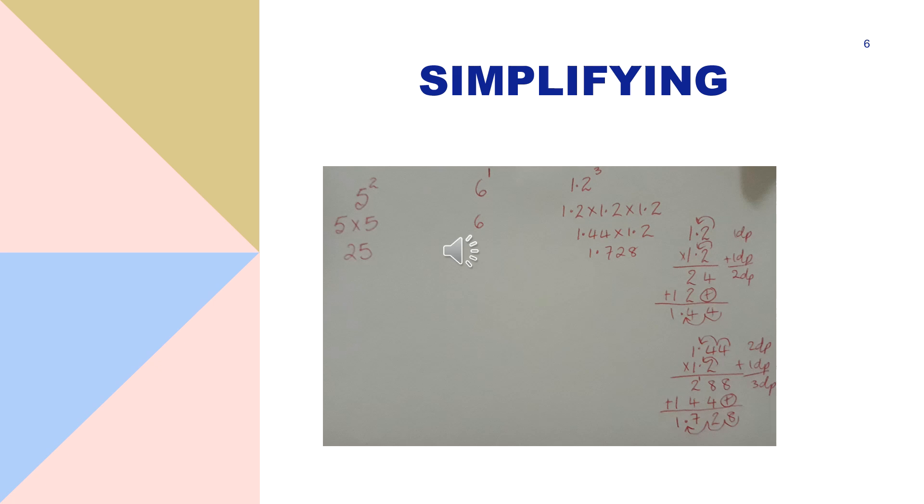For the second one the power is 1, it's the first power. So therefore we have the base 1 time which we have 6. And it is not 6 times 1 it is just the 6 appearing once.